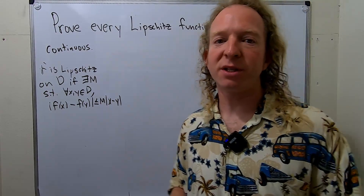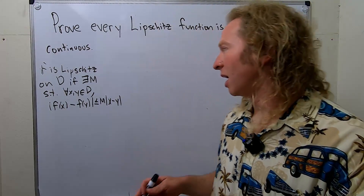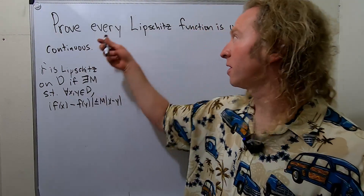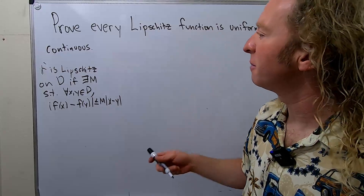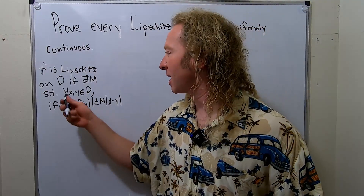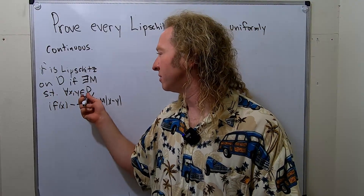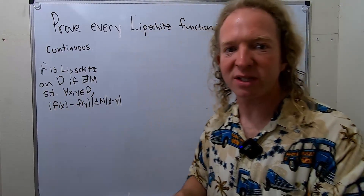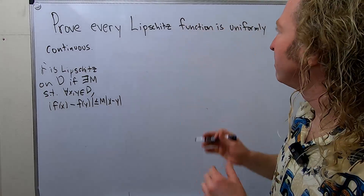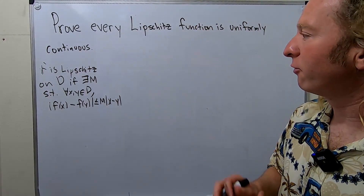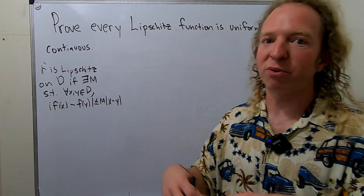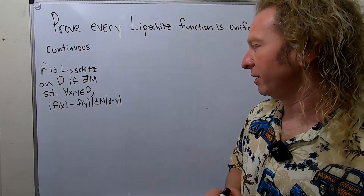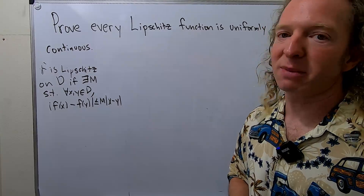is less than or equal to M times |x - y|. A function with this property is said to have the Lipschitz condition, or is said to be a Lipschitz function. Here we assume x and y are elements of D, and D is a subset of some n-dimensional space. It doesn't really matter if we use the real numbers or the plane, so we'll just pretend everything is in n dimensions.